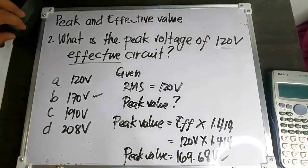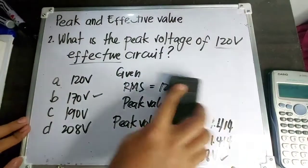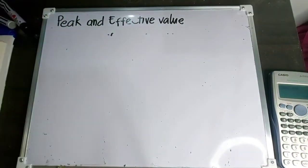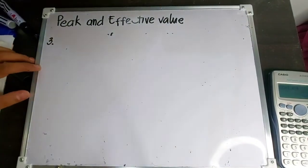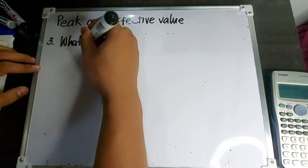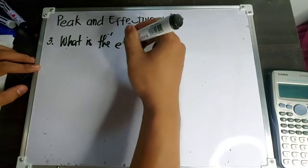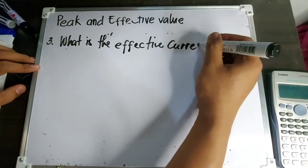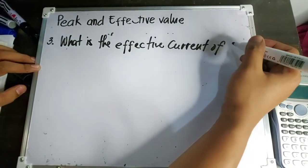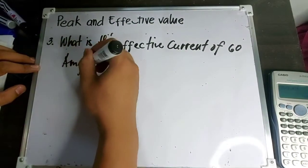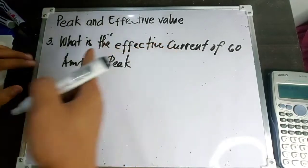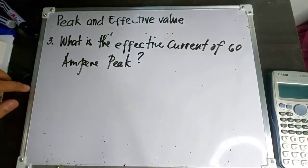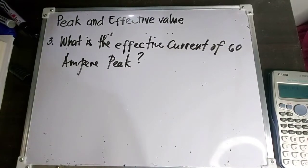Sample number 3 tayo para mas mapamiliarize tayo. Number 3: What is the effective current of 60 ampere peak? Sa problem na to, nasukat nyo yung peak which is 60 ampere. Ang hinahanap dito naman is yung effective value.